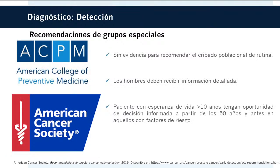El American College of Preventive Medicine determinó que no hay evidencia suficiente para recomendar el cribado poblacional de rutina con antígeno prostático y examen digital rectal, pero sugiere que los hombres reciban información sobre beneficios y daños para tomar una decisión informada. La American Cancer Society recomienda que los hombres con al menos 10 años de esperanza de vida discutan la detección con su proveedor a partir de los 50 años si no presentan factores de riesgo; en aquellos con factores de riesgo, el screening puede realizarse de manera más temprana.